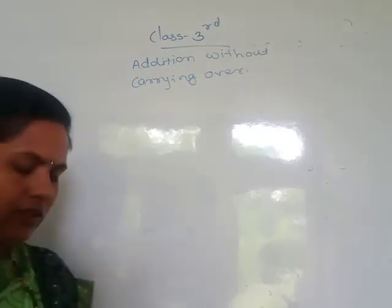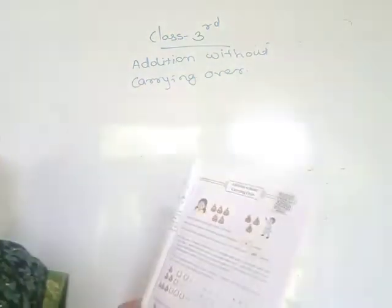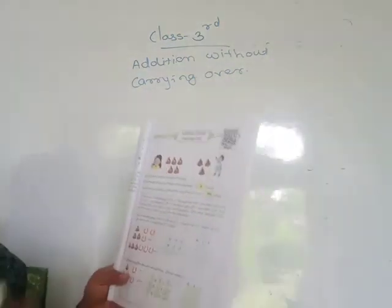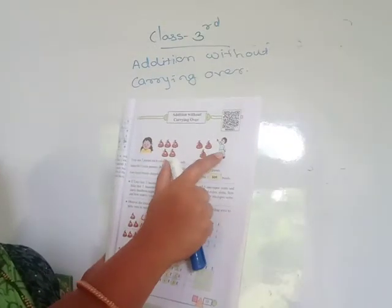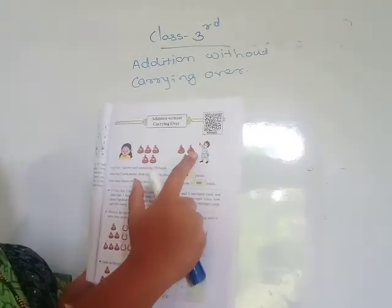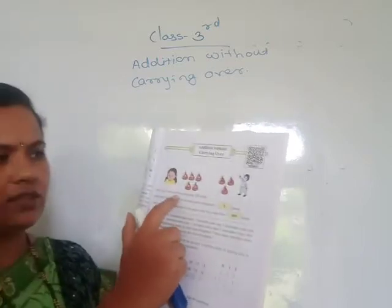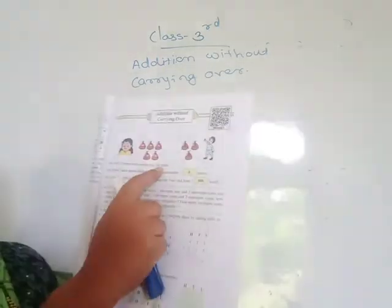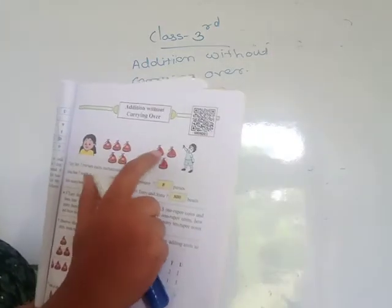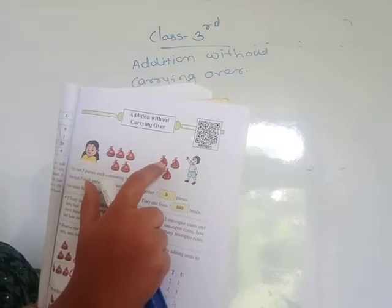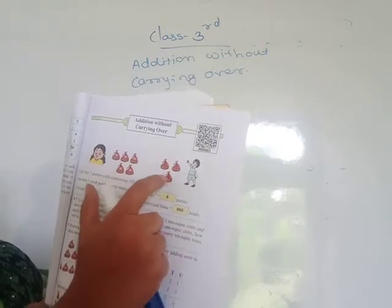In your textbook page number 19, third chapter. Zonu has 3 purses — you see here, 1, 2, 3 purses — each containing 100 beads. So that's 100, 200, and 300.